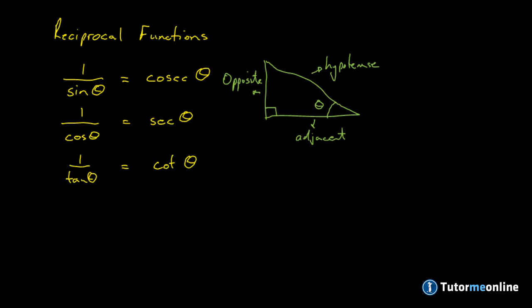So in order to define these as reciprocals for a right-angled triangle, let's use our mnemonic from the previous video, which was SOHCAHTOA. This mnemonic refers to sine, cosine and tangent, so we will have to use the inverse of this for the reciprocal functions.